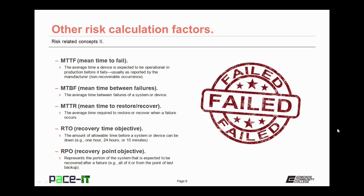Then there's the MTBF, the mean time between failures — the average time between failures of a system or device. Then we have the mean time to restore or recover, the MTTR. This is the average time required to restore or recover when a failure occurs. Then there's the RTO, the recovery time objective. This is the amount of allowable time a system or device can be down, and it can be measured in hours, minutes, or even days.